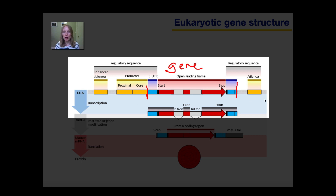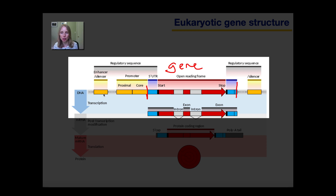In yellow are the regulatory regions. For prokaryotes, you learned that they organize their genes into operons, where a single promoter controls multiple related genes. That is not the case for eukaryotes — in eukaryotes, there's one promoter per gene. The promoter is where RNA polymerase binds to transcribe the gene, and it also has regions where regulatory proteins called transcription factors bind. Something prokaryotes don't have is these additional enhancer regions, which we'll focus on in this lesson.